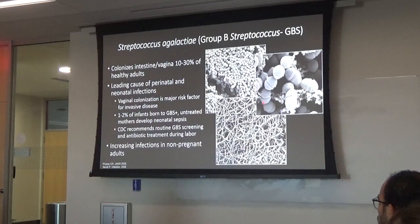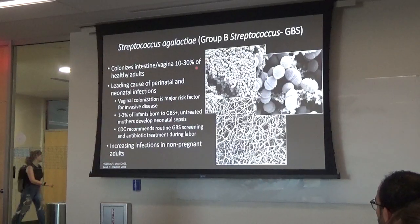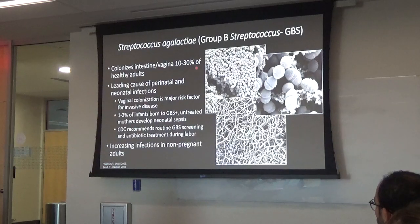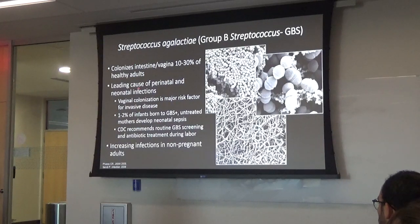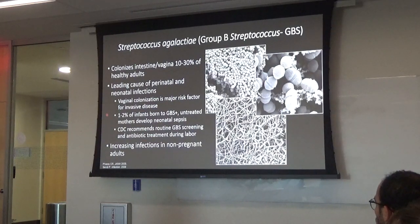Where do we find GBS normally? In the intestine — it lives there without causing any problems. All our colonization data comes from late pregnancy, typically rectovaginal colonization. We know that if GBS colonizes those tissues in the mom, that's the major risk factor for ascending infection during pregnancy. About 10-30% of the population is probably colonized, and if we do nothing for colonized moms, about 1-2% will give birth to a baby infected with Group B Strep.